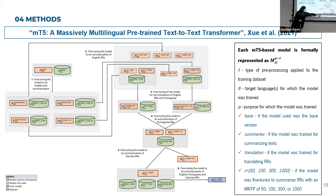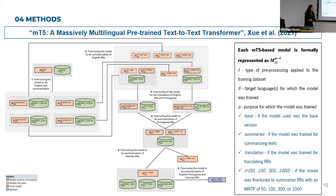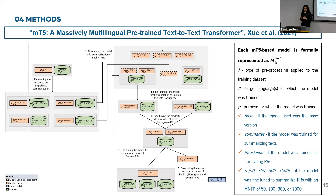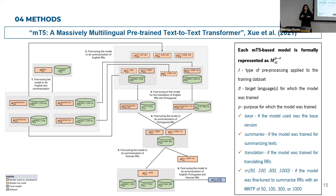So far, all models were monolingual, but that was not the point of my project. The point was to get a multilingual model. To do so, I developed a model by fine-tuning the final German checkpoint with the three datasets — Portuguese, English, and German — at the same time, and in the same proportion to avoid overfitting to one language.